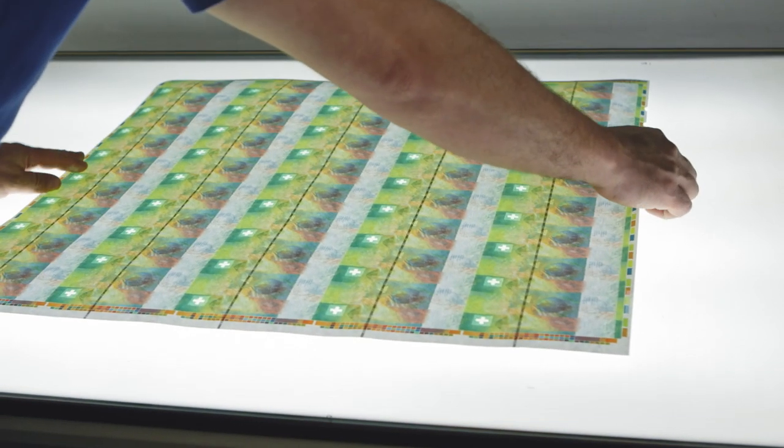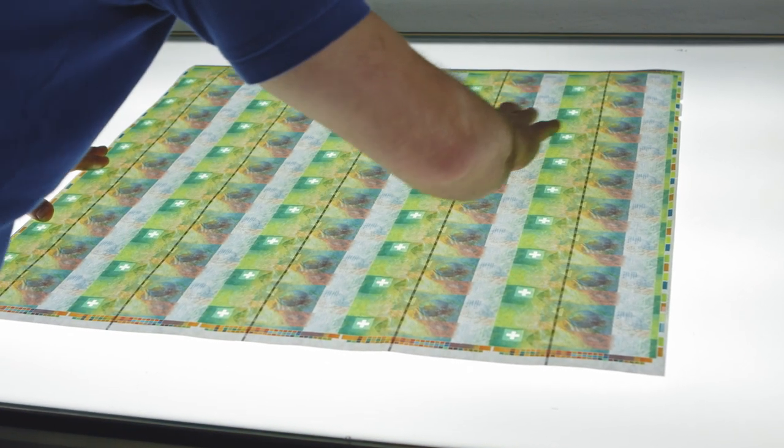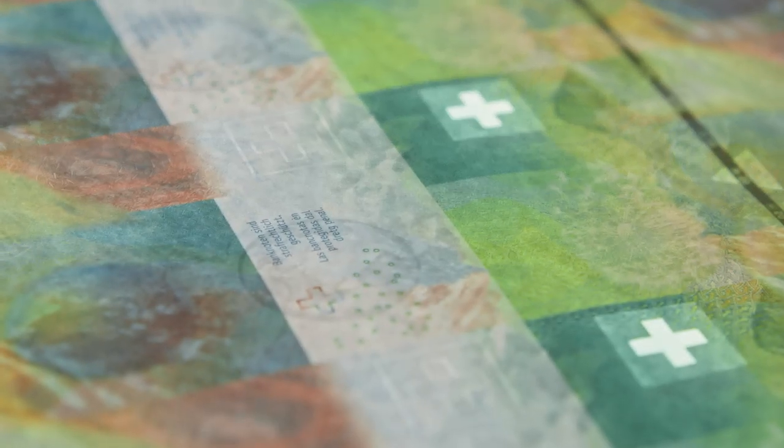The importance of this precision becomes clear if you hold the sheet up to the light. The fragmented red and green lines combine to produce a Swiss cross.